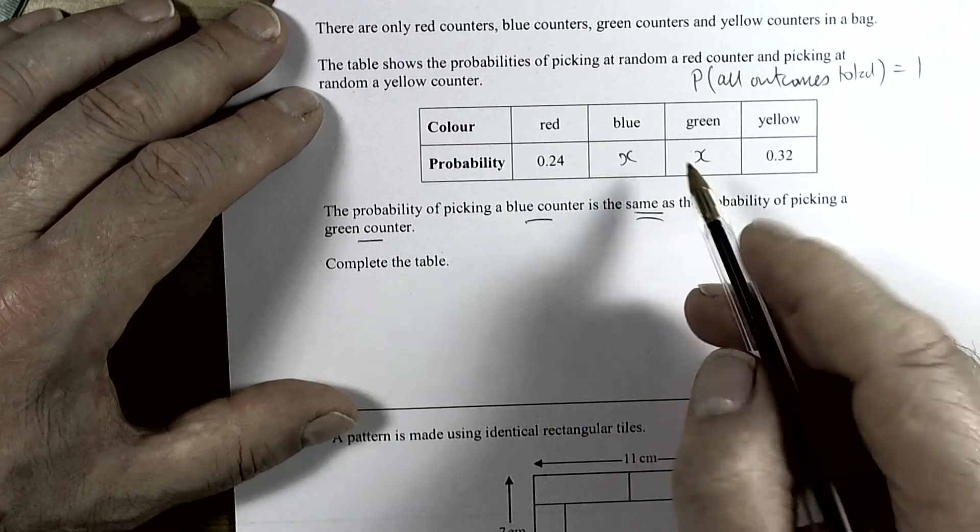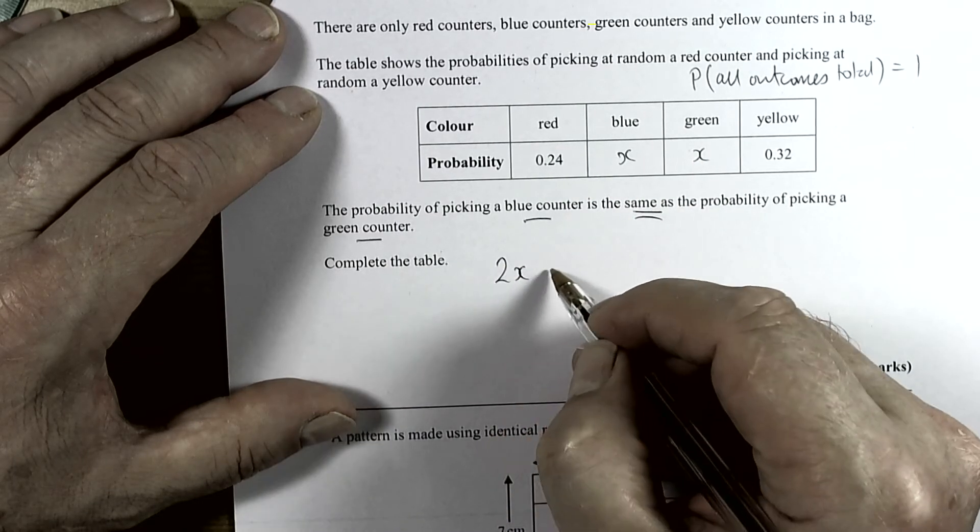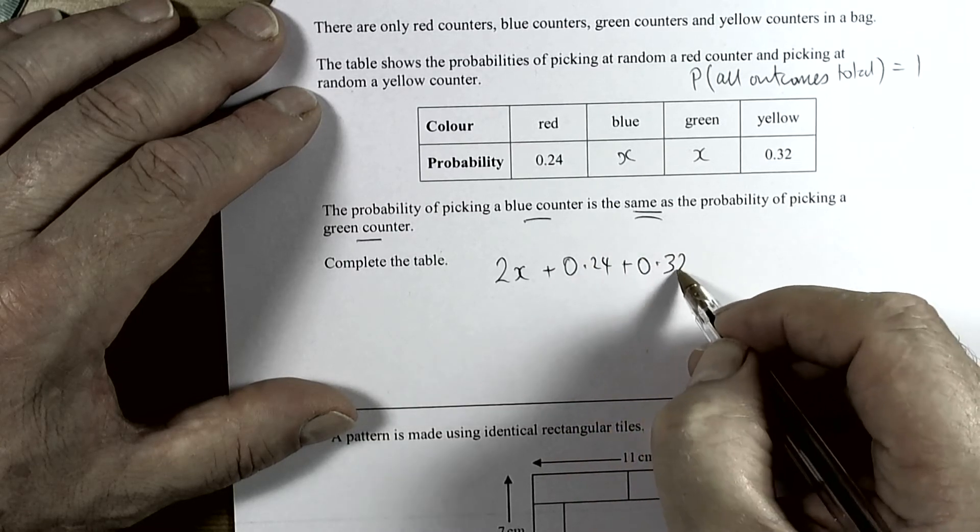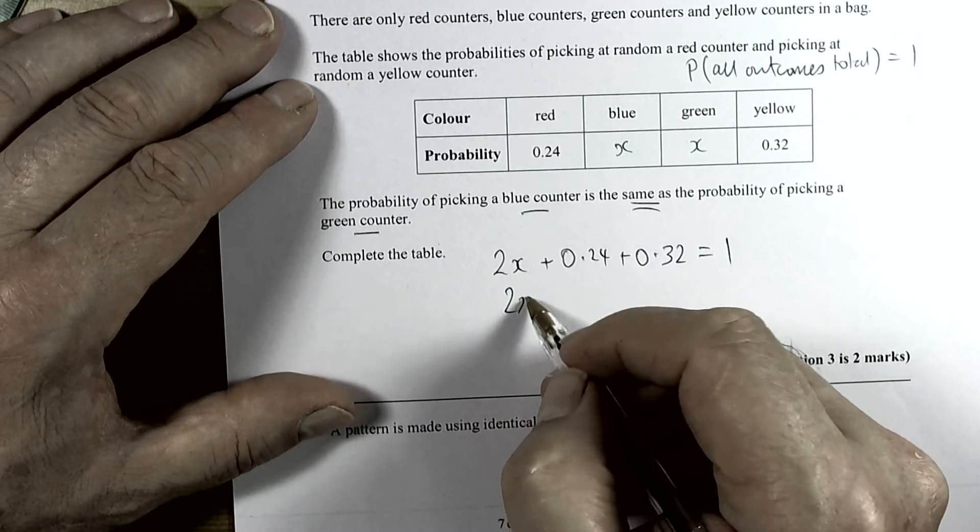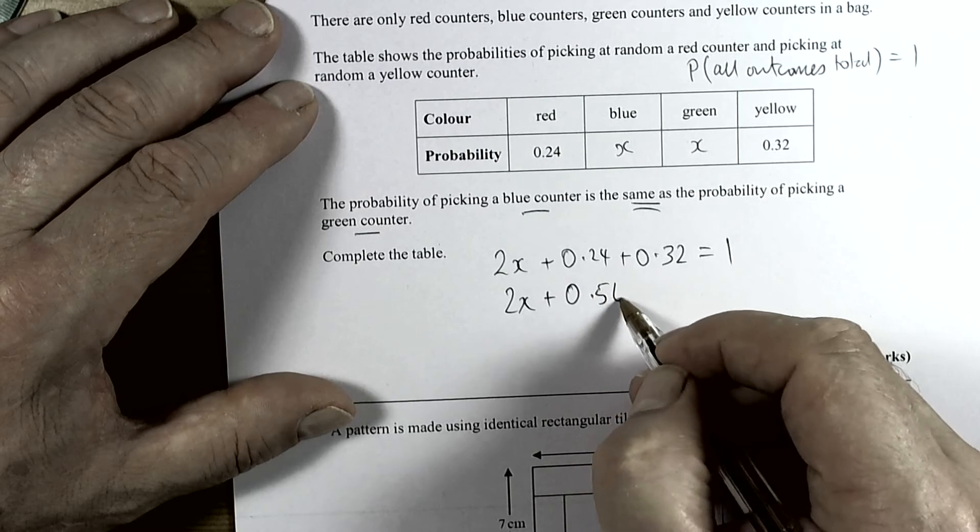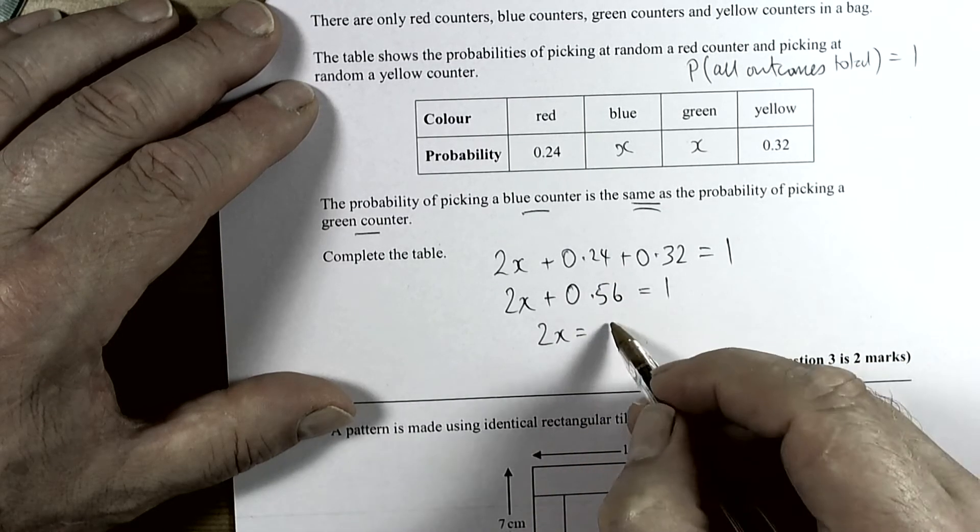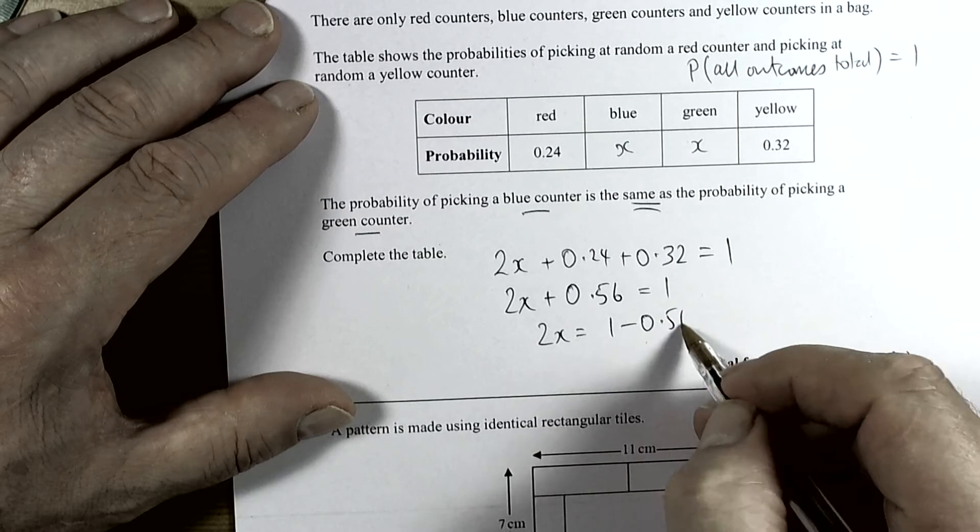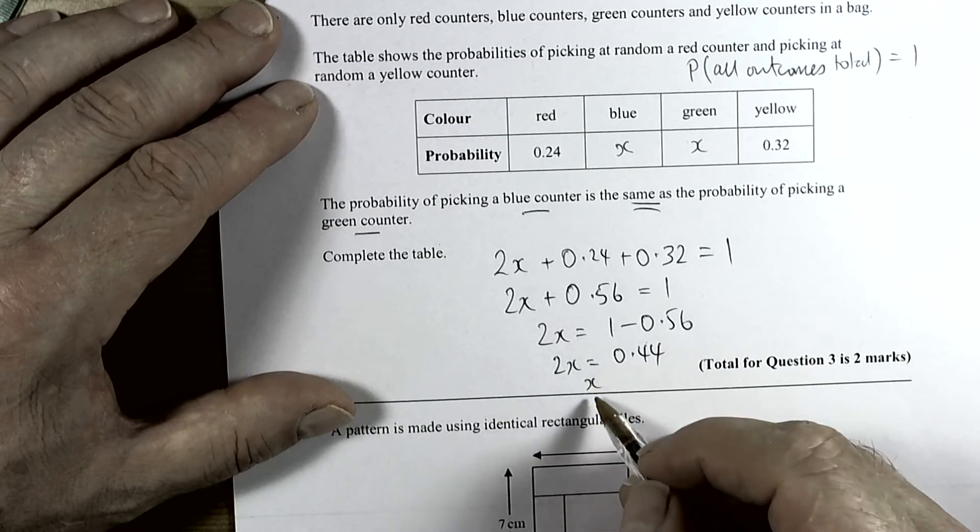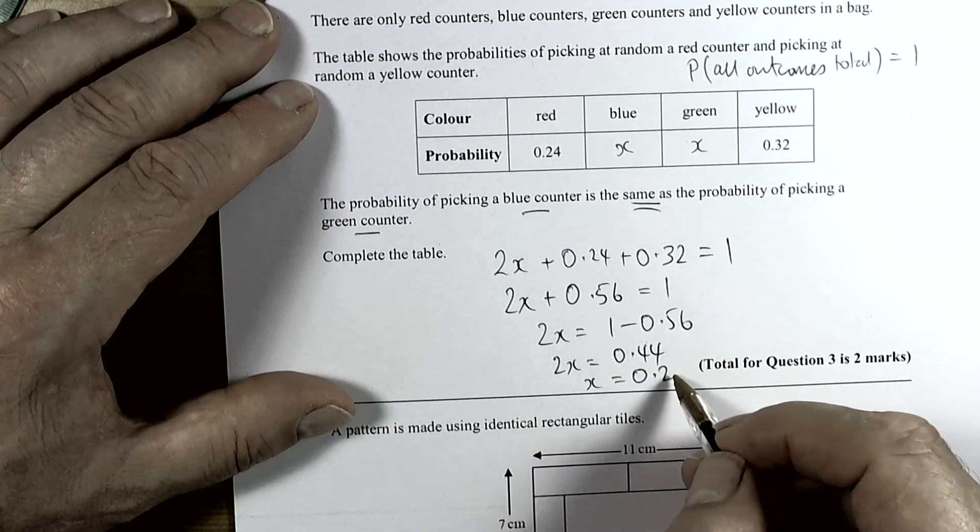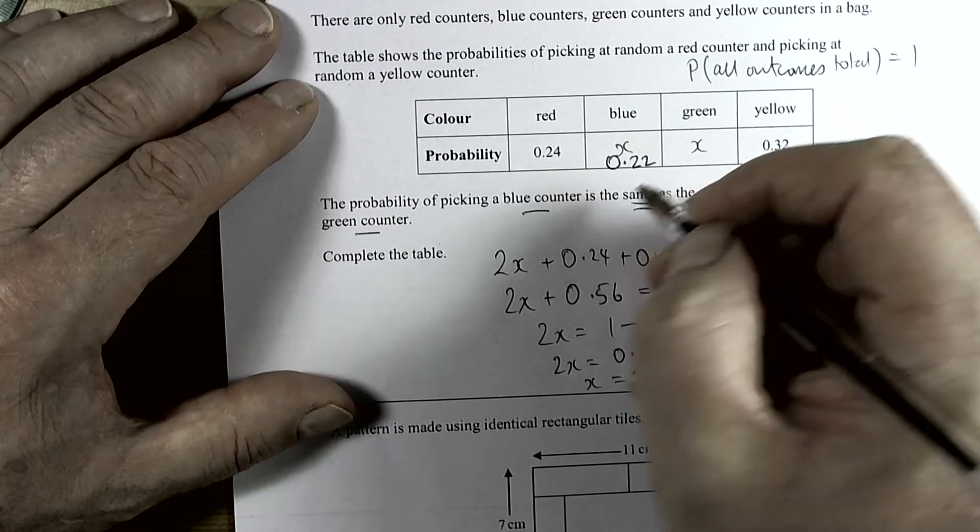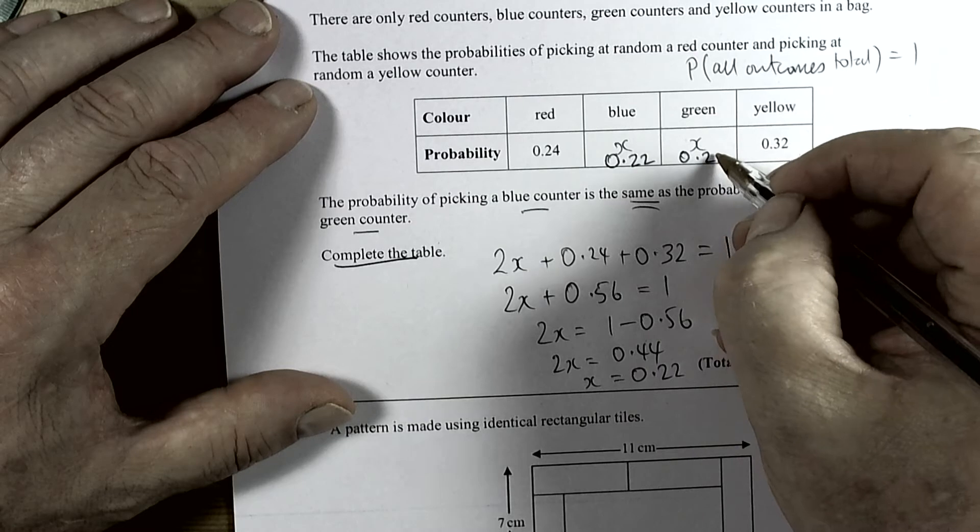We have an equation: two x's added to 0.24 added to 0.32, and that must equal one. Simplify it down - 0.24 plus 0.32 is 0.56. So two x's must equal one take away 0.56. Two x's must equal 0.44. Then we halve down to get the x value, so the x value will be 0.22. When it says complete the table, we can put 0.22 and 0.22.